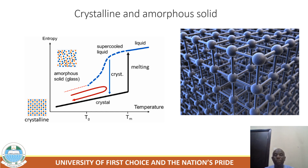For crystalline materials, the structural makeup is ordered in three principal directions. Such structural order is absent in amorphous materials, such as glass.